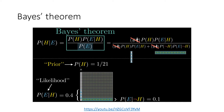The probability of a person having that personality given that he's not a librarian — or he's a farmer — is 10%. And this is the Bayes theorem. We are going to start here. This is our main question: what is the probability of a person being a librarian, given that he has that personality?